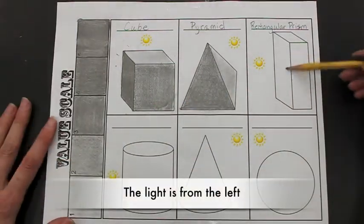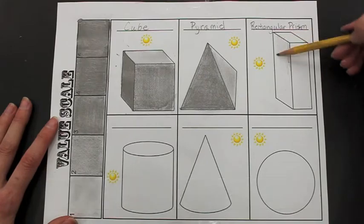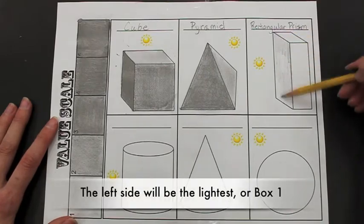In this example, the light is coming from the left, so the left side will be the lightest, a box 1.